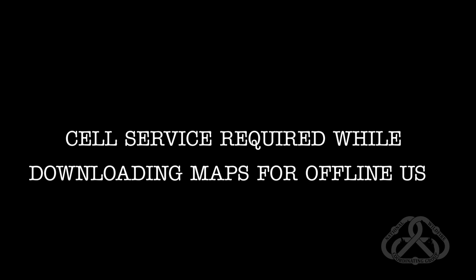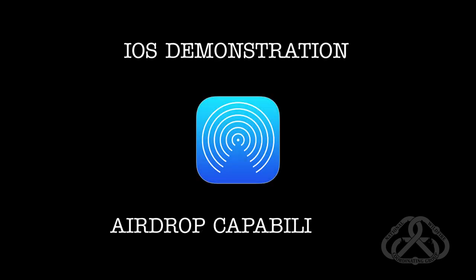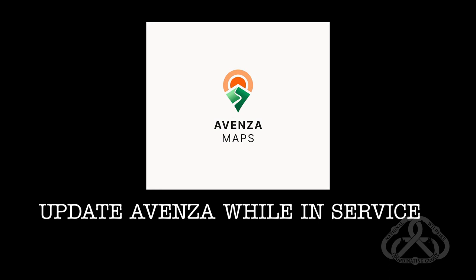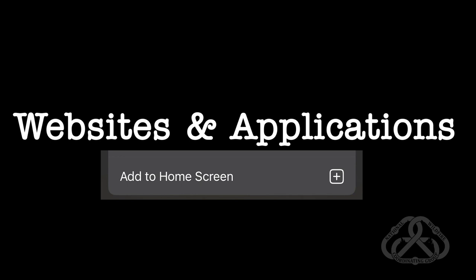To execute these steps, self-service is required while downloading maps for offline use. Quad maps from this website are only available if the targeted area includes national forest lands. I am using iOS for this demonstration for its offline AirDrop capabilities. To successfully transfer maps between iOS devices using AirDrop, both devices must be using the same version of Avenza Maps. Download apps and thumbnail websites before proceeding, and I recommend adding these to your home screen for quick reference.